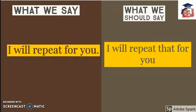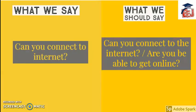The first screen says 'I will repeat for you' — instead of this you should say 'I'll repeat that for you.' Next: 'Can you connect to the internet?' or 'Are you able to get online?' This is the correct phrase if you want to ask someone whether they are able to get connected to the internet.